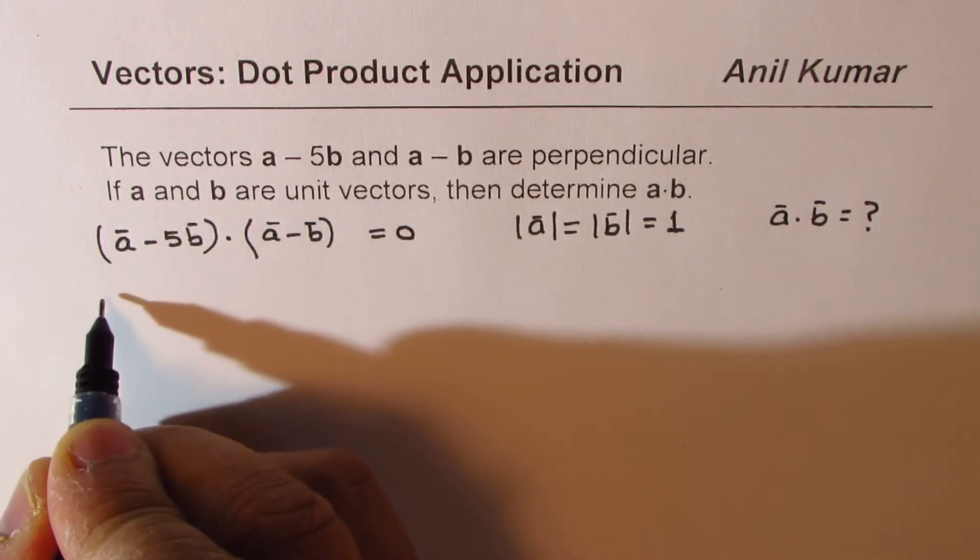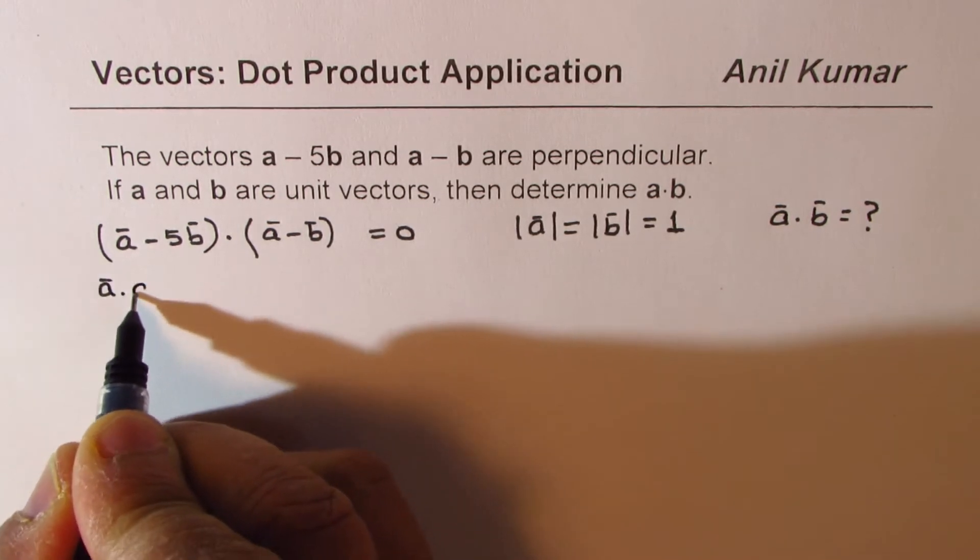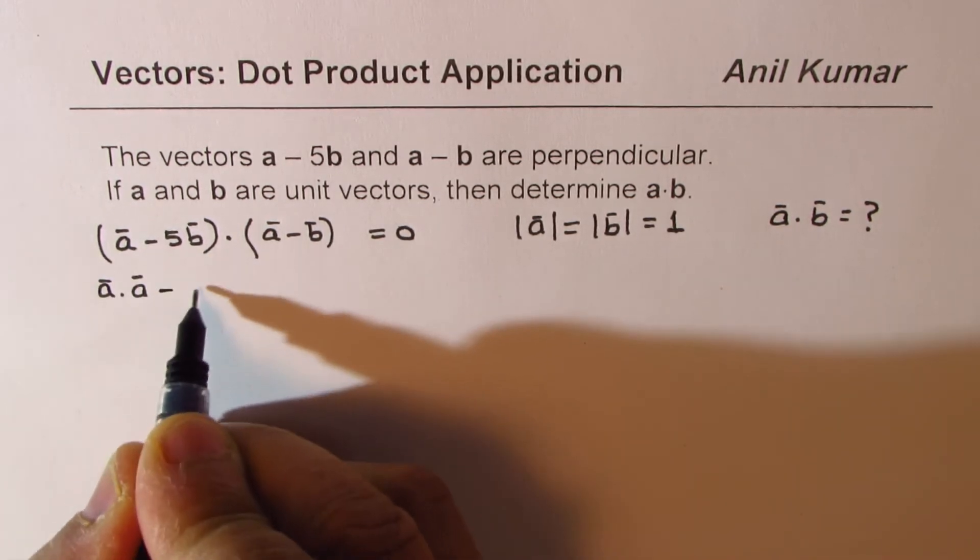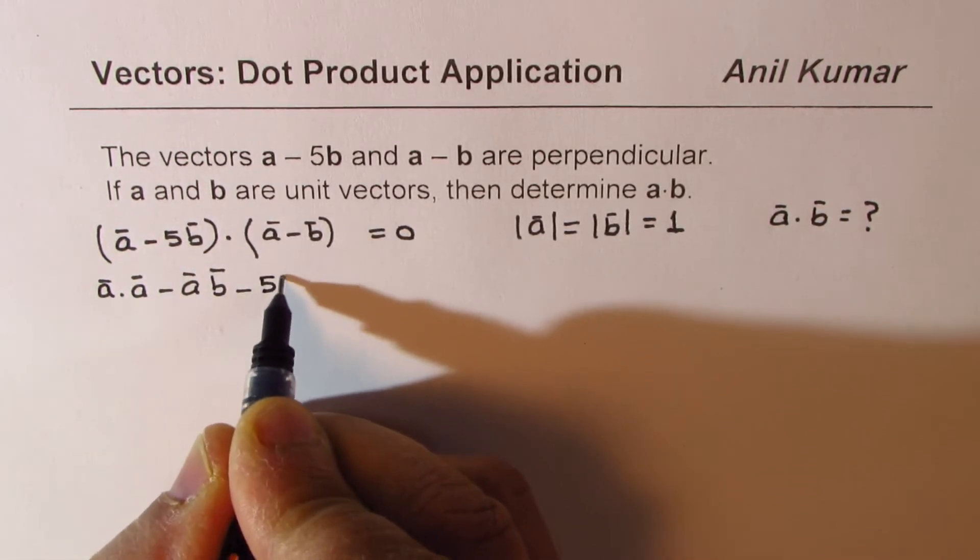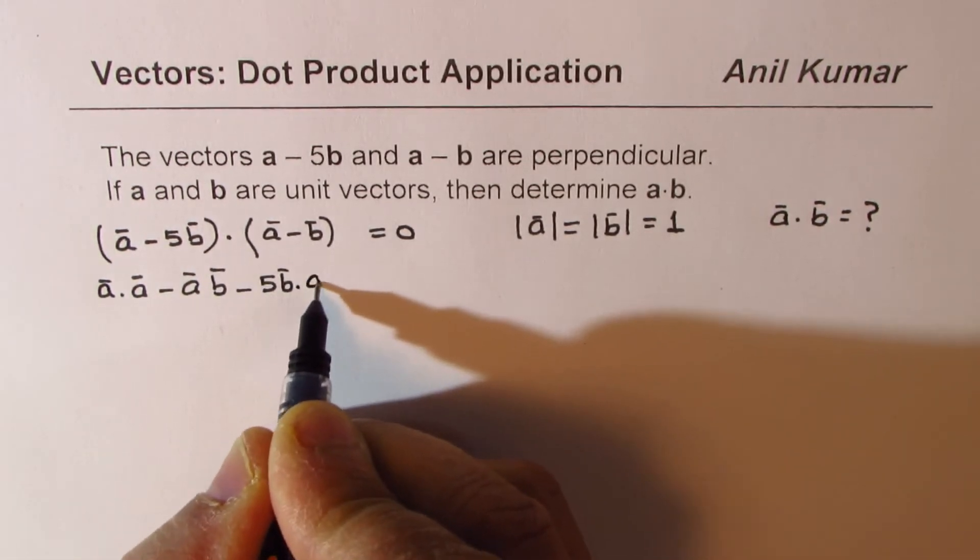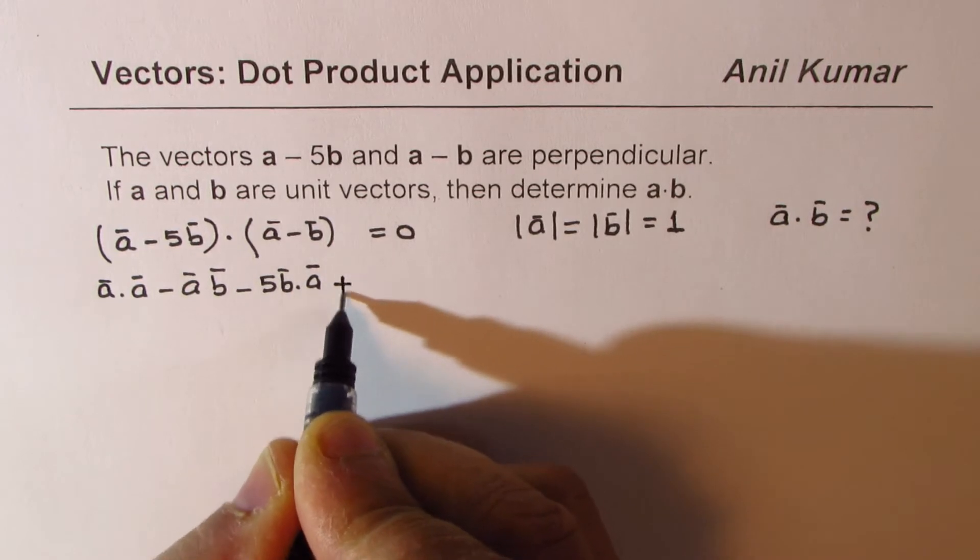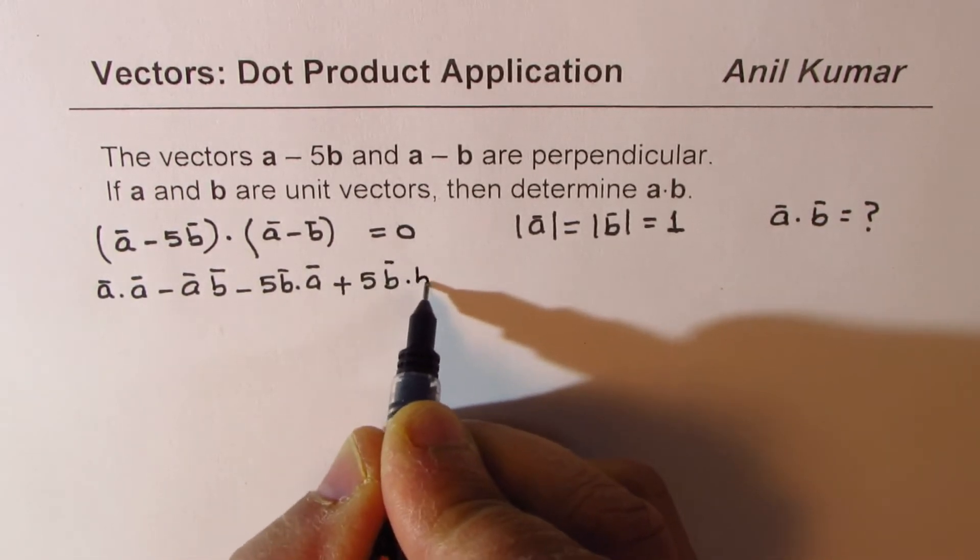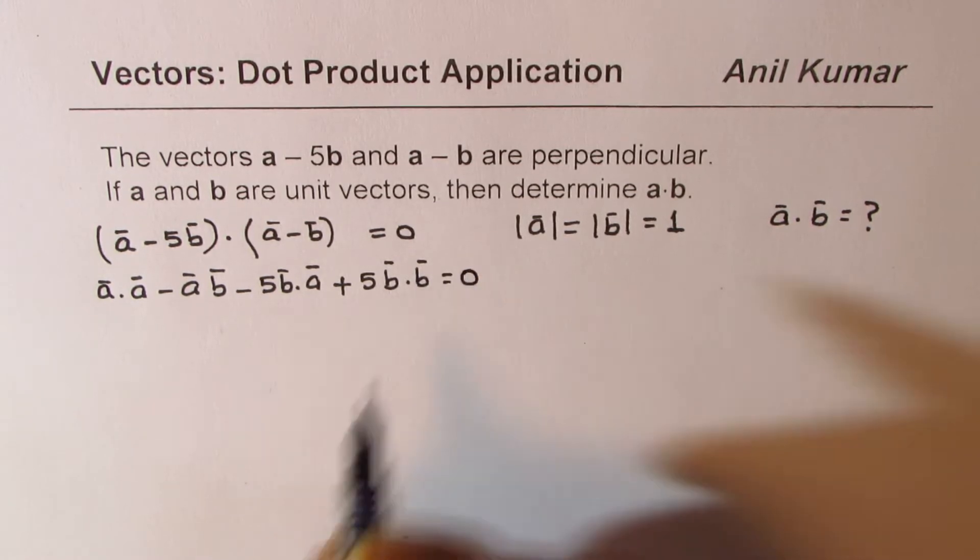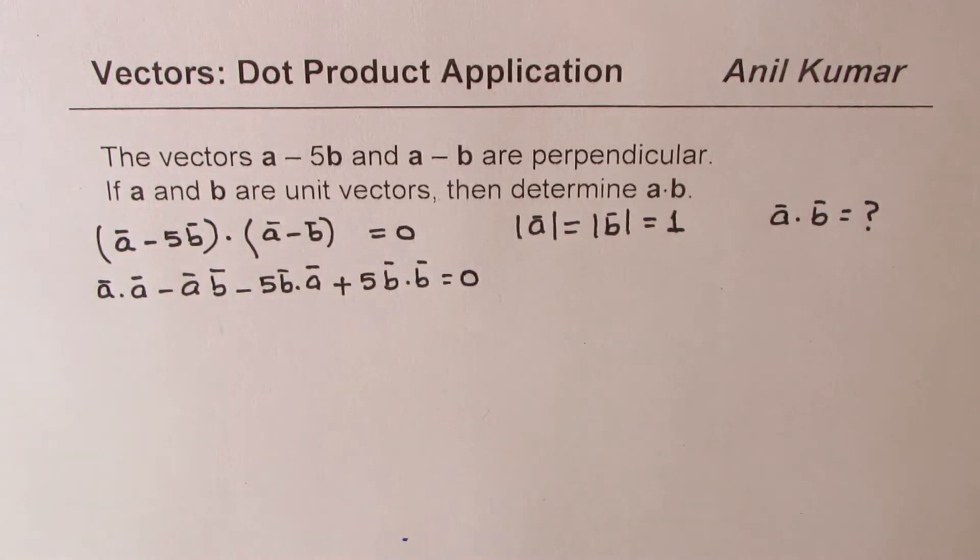So, dot product. A dot A, this is the first thing, minus A dot B, then minus 5B dot A, minus minus becomes plus 5B dot B, equals to 0. So we applied this distributive property.